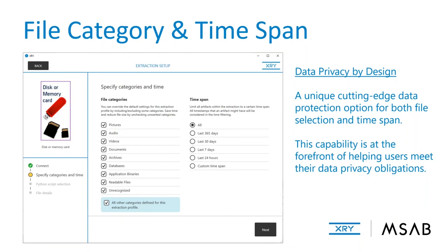A considerable recent addition to XRY's capabilities is category and time span filtering. This is a big leap forward at the point of extraction — not narrowing your focus after the fact. The ability to narrow the scope of extraction by both time frame and artifact category provides huge benefits for data privacy and shaving off extraction time. In the past we always used the 'get everything and narrow it later' approach — this changes that substantially.